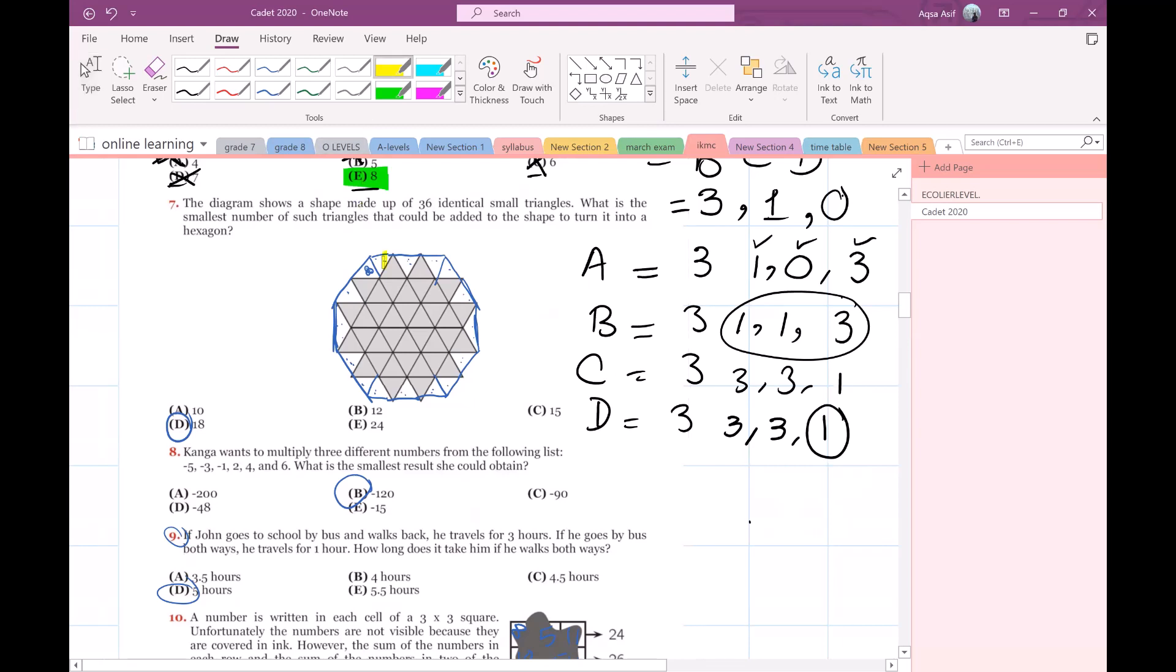So I have made these triangles. Let's count these triangles. I've made a hexagon out of it. Let's count these triangles. Let's start from here: 1, 2, 3, 4, 5, 6, 7, 8, 9, 10, 11, 12, 13, 14, 15, 16, 17, and 18. So 18 is my answer for question number 7.